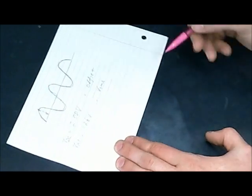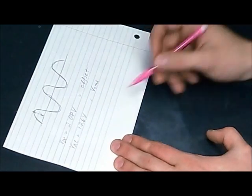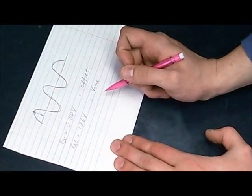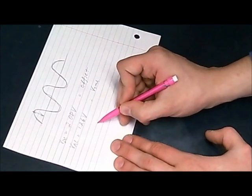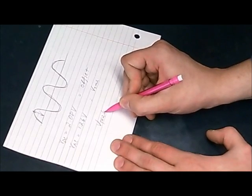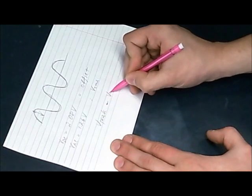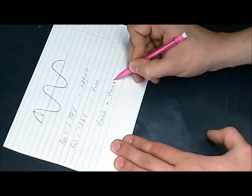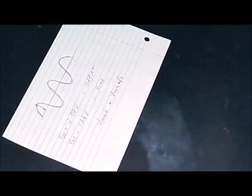Since we know it's a sine wave, we do this by the following formula: our Vpeak equals VRMS times square root of 2. So we calculate 1.26 times square root of 2.